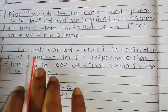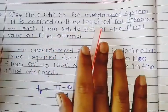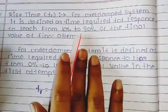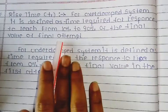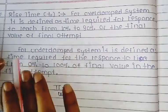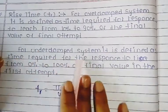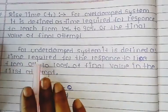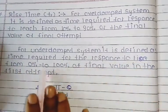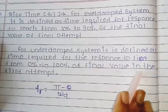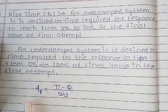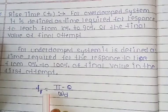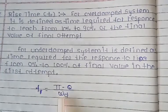Next is rise time. For the overdamped system, it is defined as the time required for the response to rise from 10% to 90% of the final value in the first attempt. For the underdamped system, it is defined as the time required for the response to rise from 0 to 100% of the final value in the first attempt. The formula: rise time Tr equals pi minus theta upon omega-d.